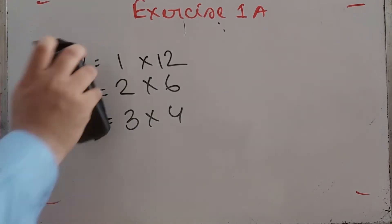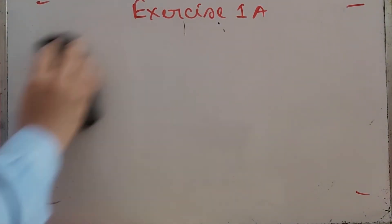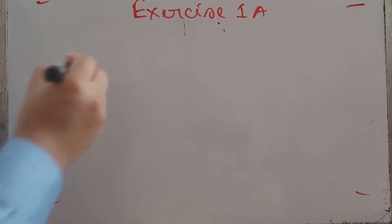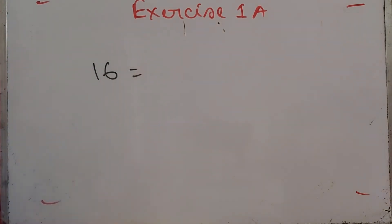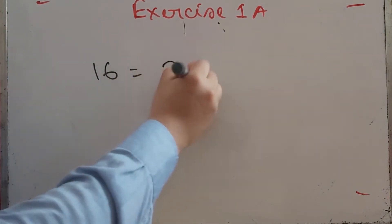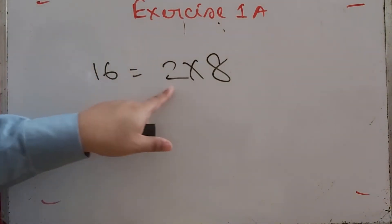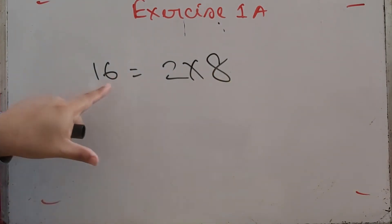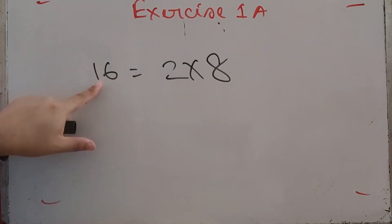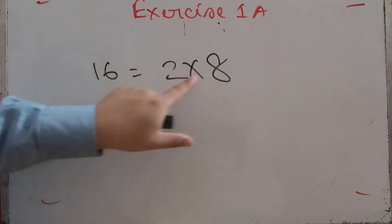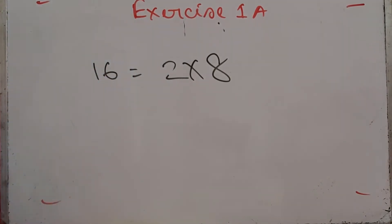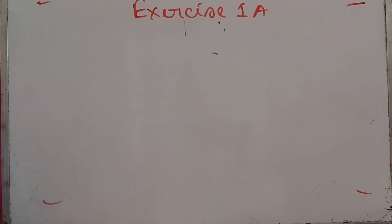Another example: if we write 16 as 2 times 8, we can say 2 and 8 are factors of 16, and 16 is the multiple of 2 and 8.